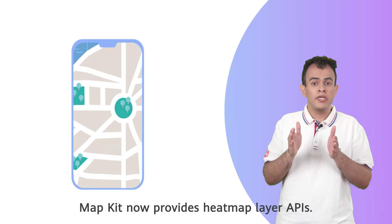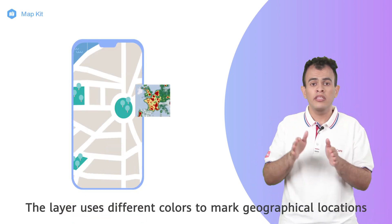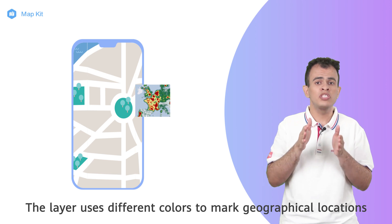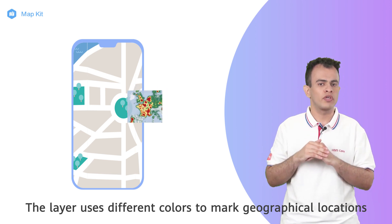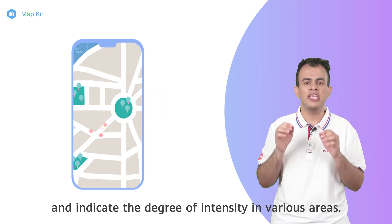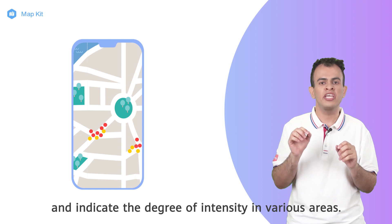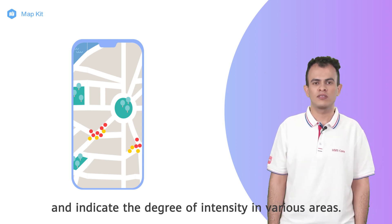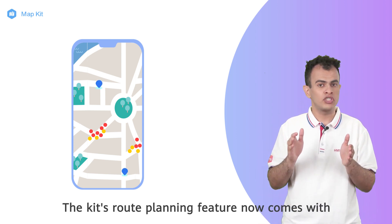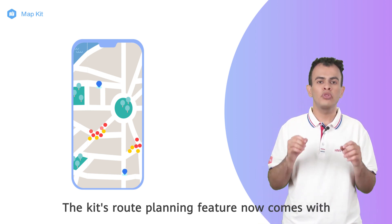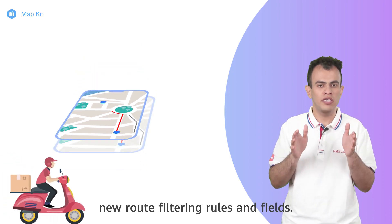Map Kit now provides heatmap layer APIs. The layer uses different colors to mark geographical locations and indicate the degree of intensity in various areas. The kit's route planning feature now comes with new route filtering rules and fields.